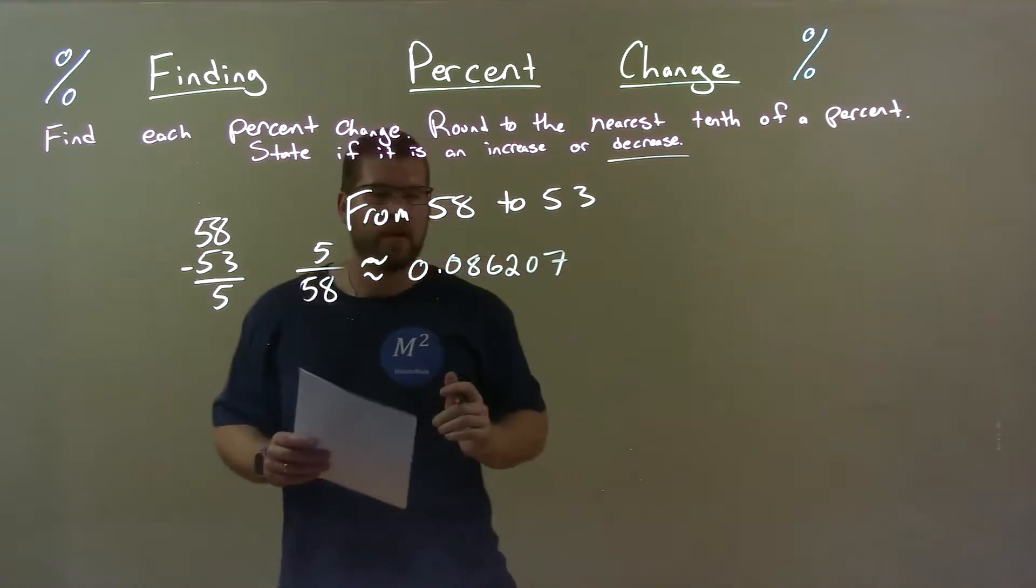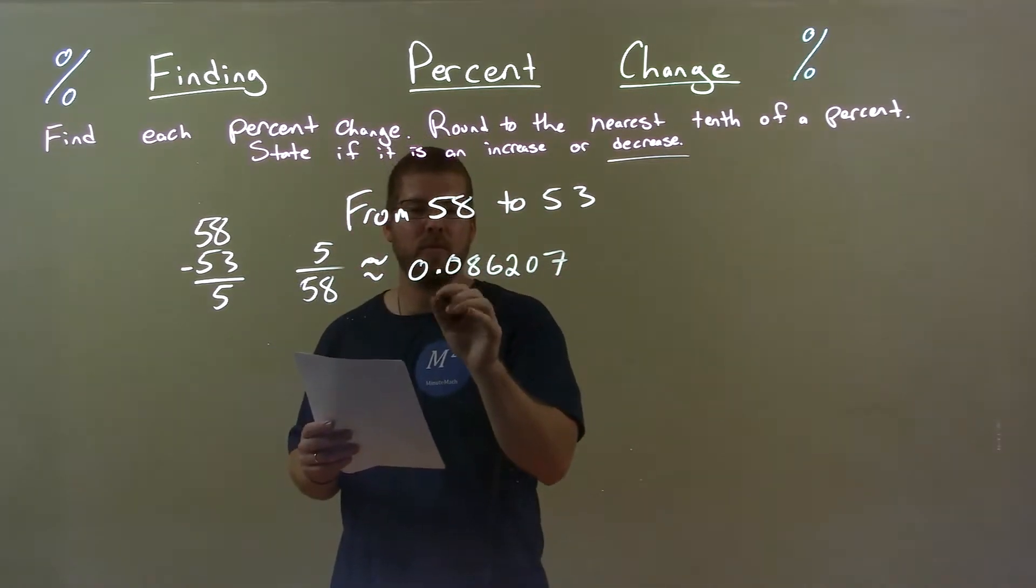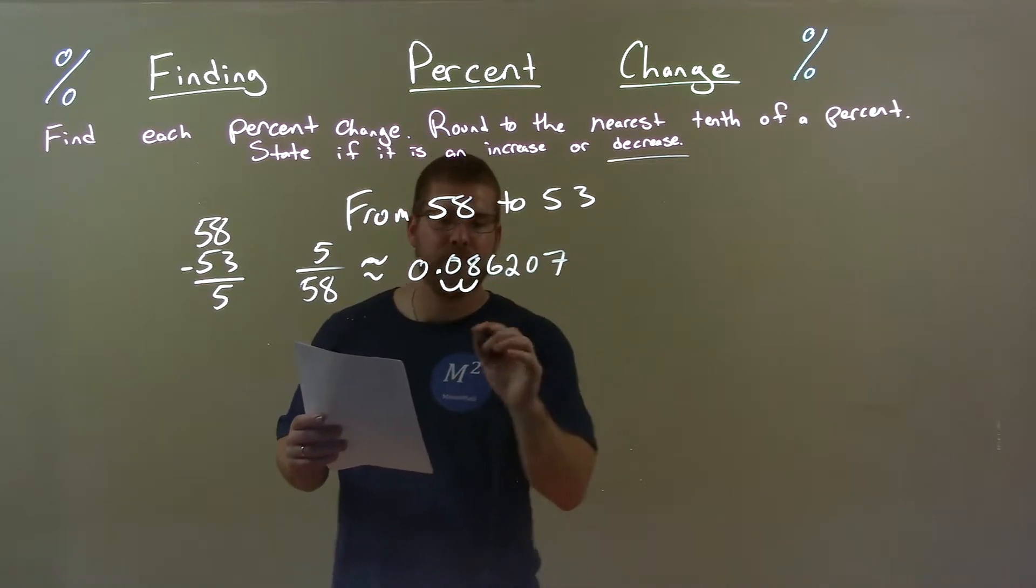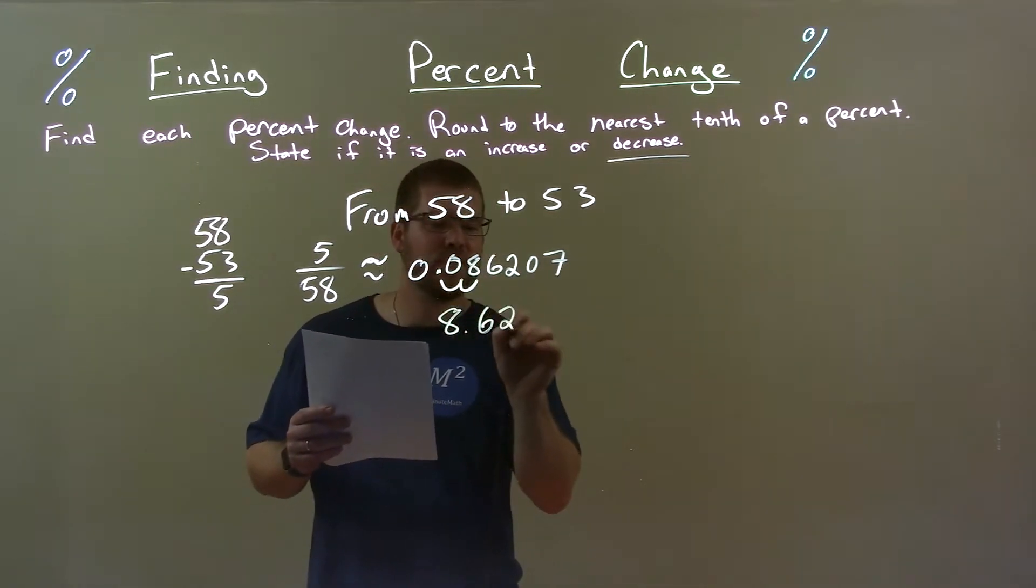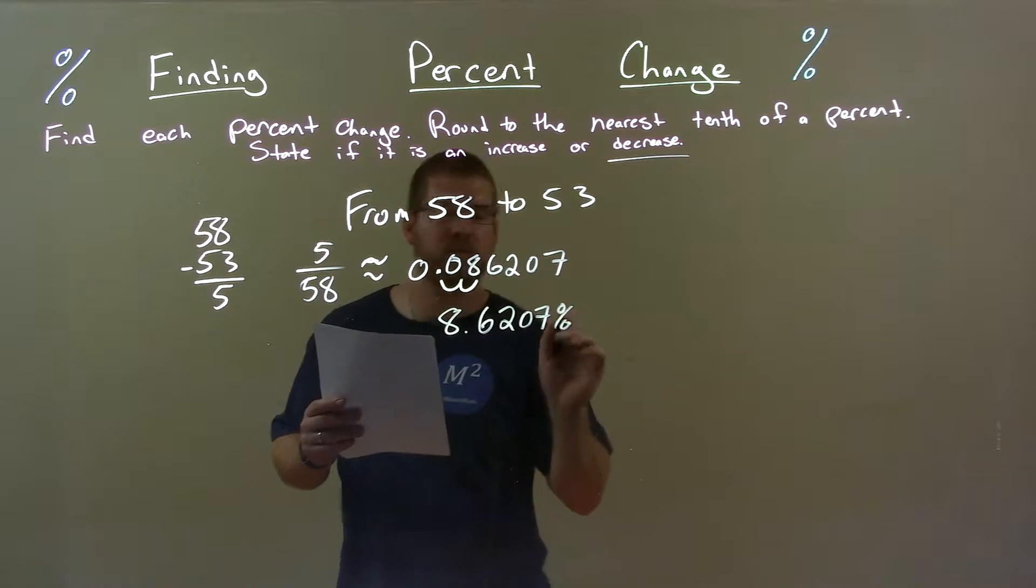All right, now convert that to a percent. Decimal place moves over two spots to the right. Got 8.6207 percent.